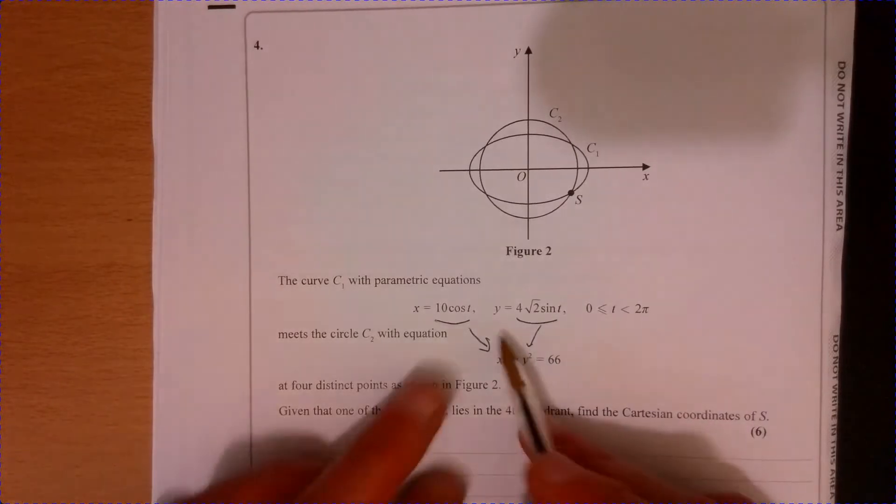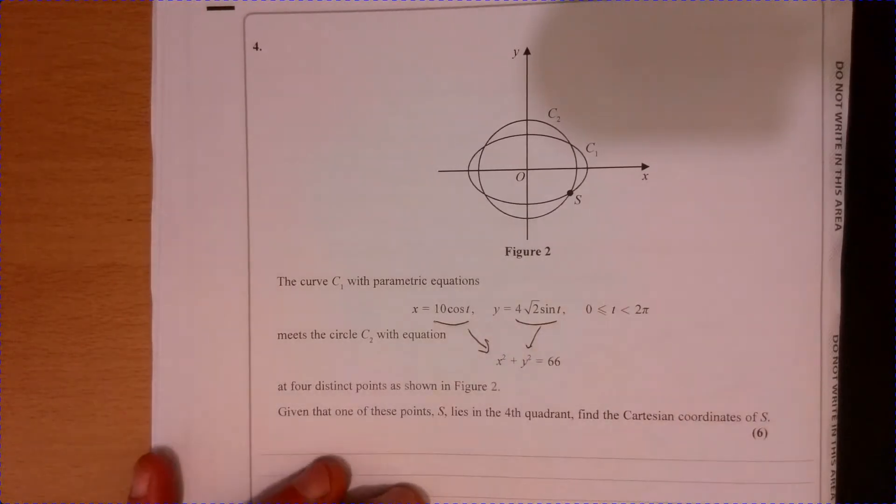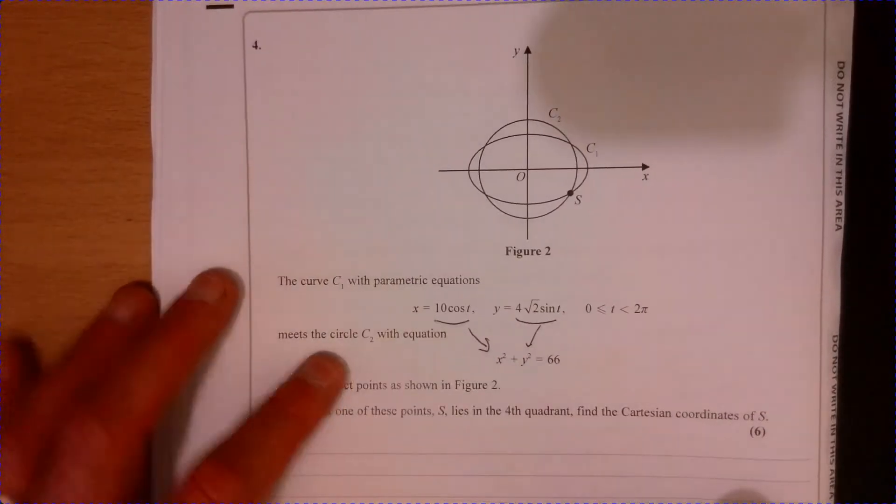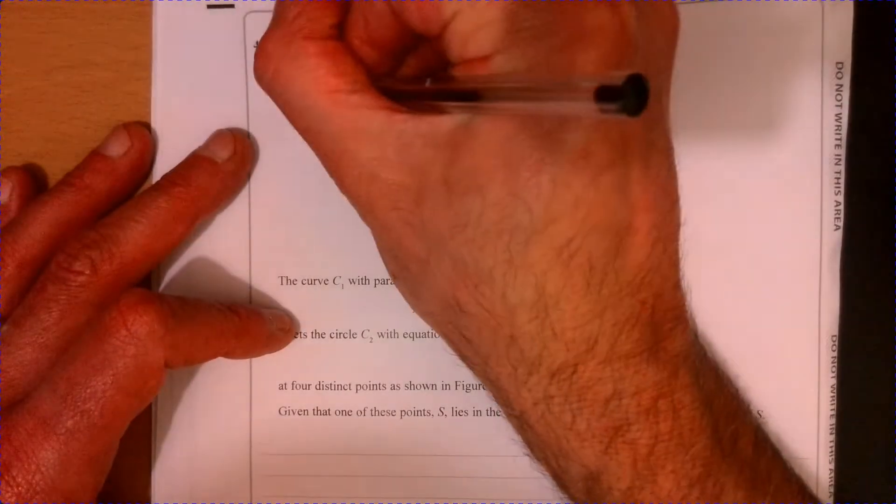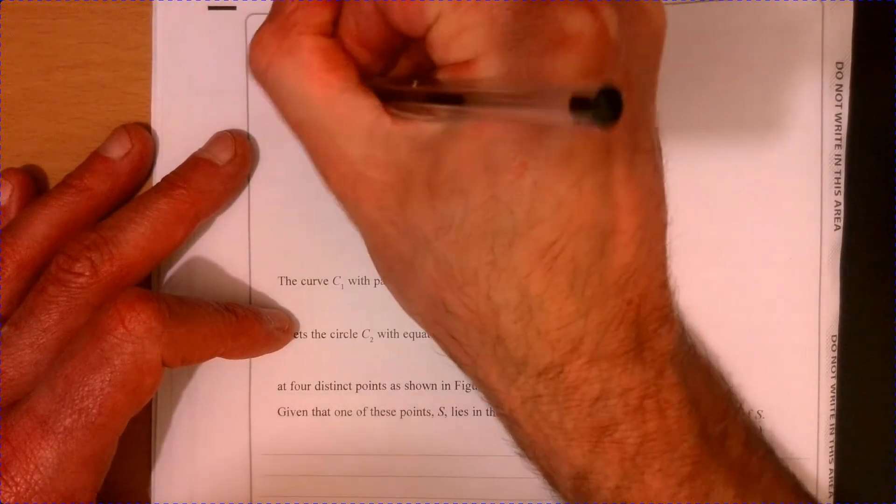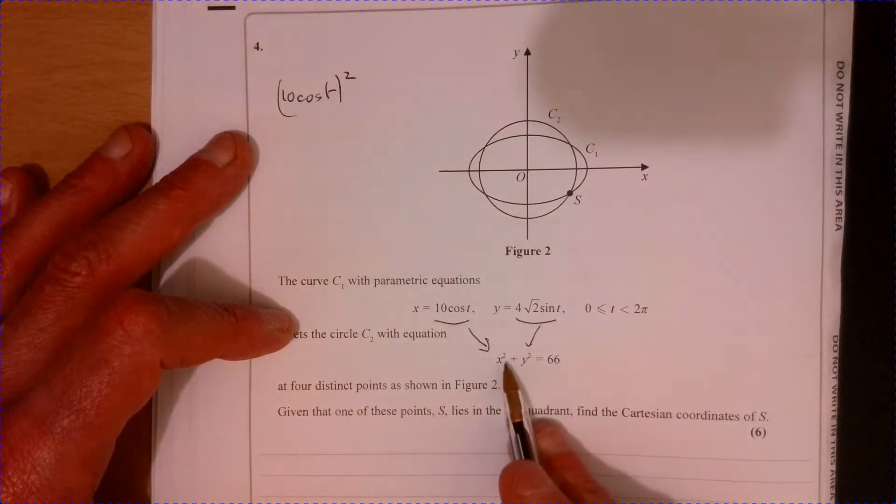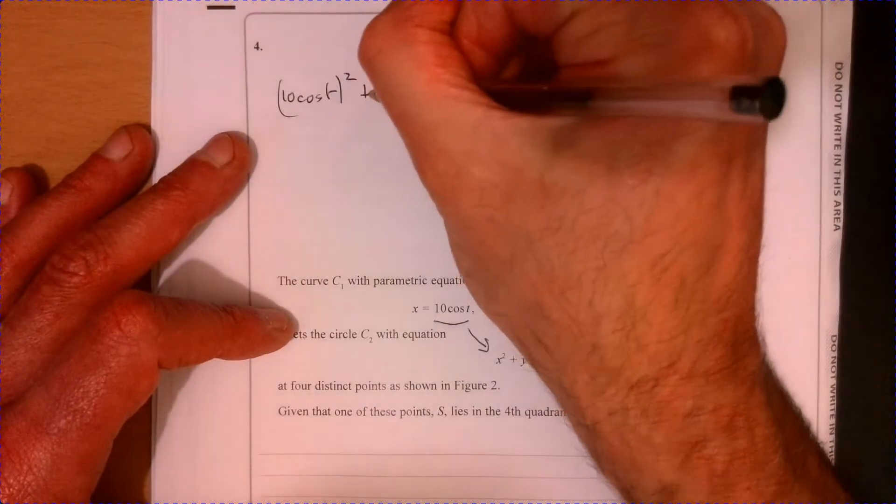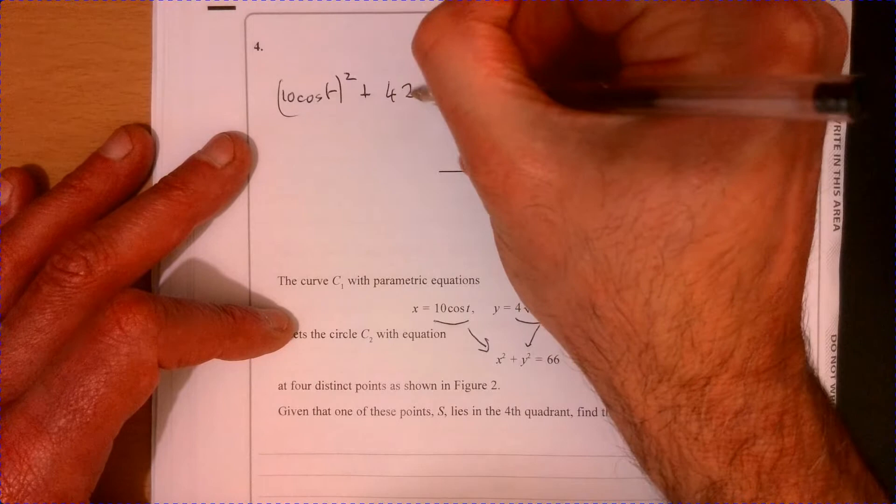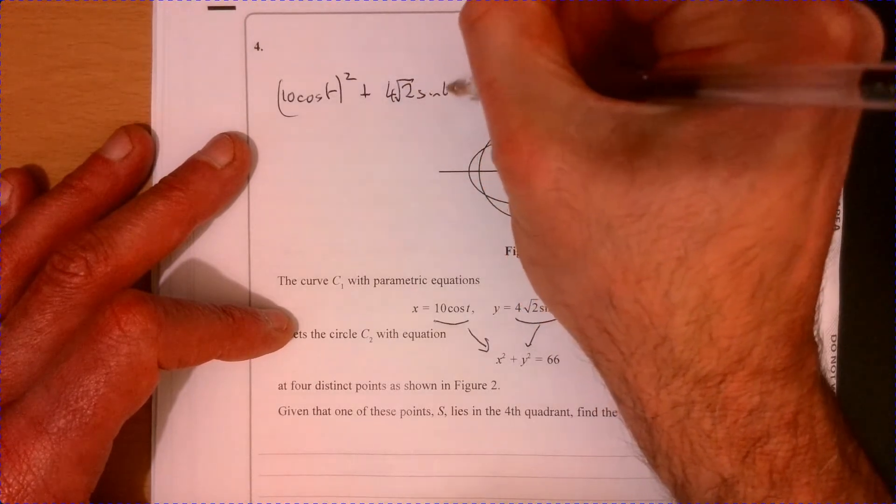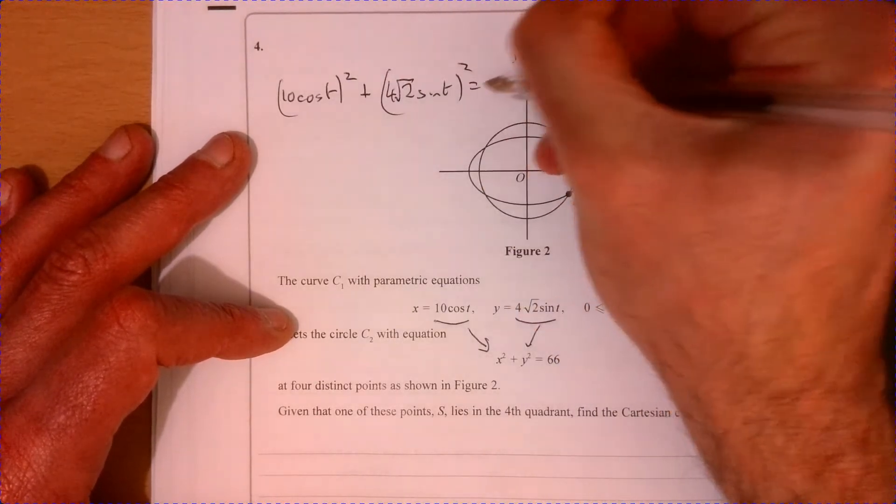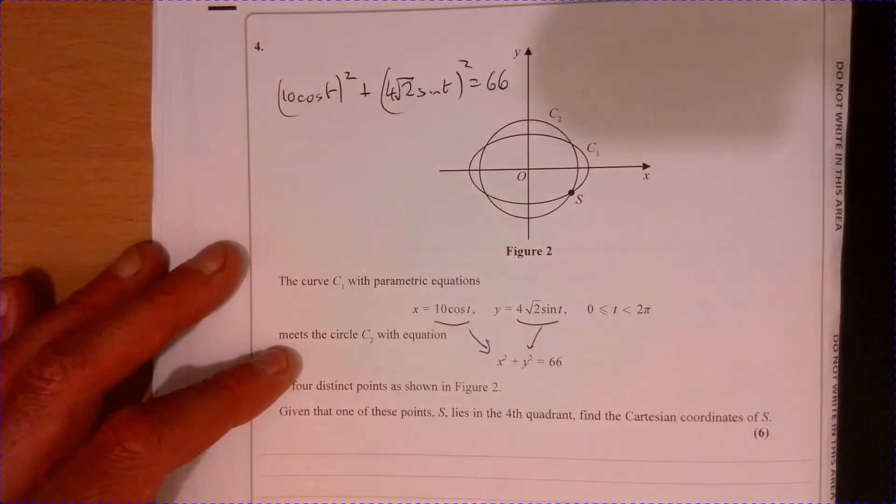So if we just do that, just substitute these directly into here. And what are we going to get? So if we write 10 cos T squared and then plus Y squared. So plus four root two sine T squared. And we know the whole lot is equal to 66.